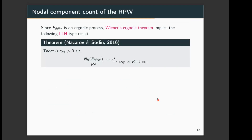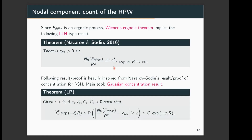For the random plane wave, being an ergodic process, Wiener's ergodic theorem implies the law of large numbers result. This is the work of Nazarov and Sodin, who are the pioneers of this area — most other results are built on or highly inspired by their work. They show that N_R/R² converges almost surely and in L¹ to a positive constant. Our result shows that N_R/R² in fact concentrates exponentially around this positive constant. The proof is heavily inspired by the related work of Nazarov and Sodin, and the main tool is the Gaussian concentration inequality.